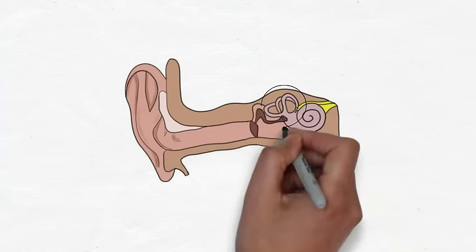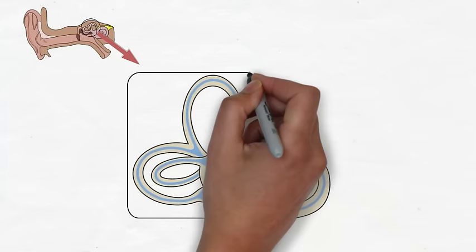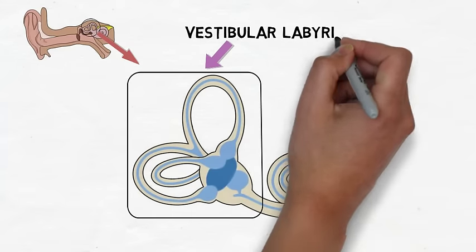The main components of the vestibular system are found in the inner ear, in a system of compartments called the vestibular labyrinth, which is continuous with the cochlea.